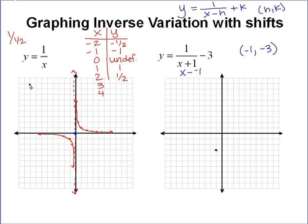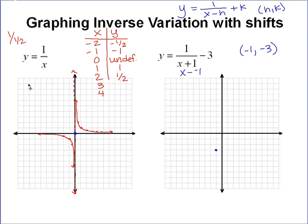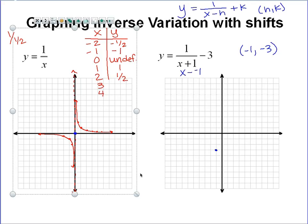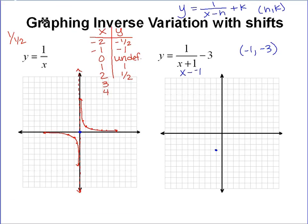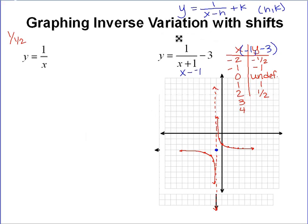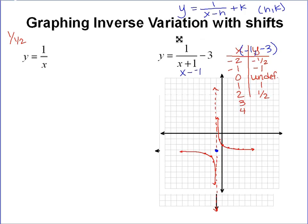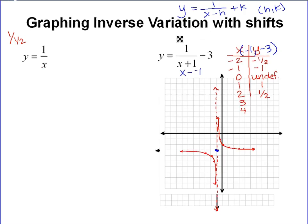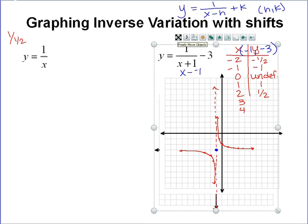Which means if I took this graph over here and dragged it and put it right there, that would be what my graph was going to look like for that. Okay, so I could plot those same points from that middle spot. You can see my vertical asymptote is at x equals negative 1. And my horizontal asymptote that used to be at y equals 0 is now shifted down 3 because of the minus 3 in the problem. Okay, so that's what that graph would look like.